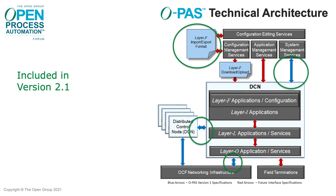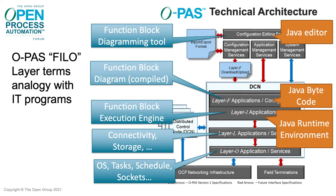The interfaces circled in green here are the ones included in version 2.1. We use this layered picture a lot to show the layered nature of the software architecture. An analogy with Java might be to have a Java editor at the top, a Java bytecode program as a Layer F application, a Java runtime environment as a Layer I application, and below that the connectivity, storage, OS tasks, scheduler, and sockets.